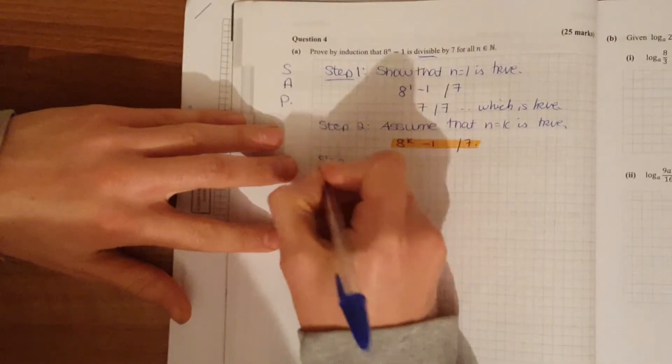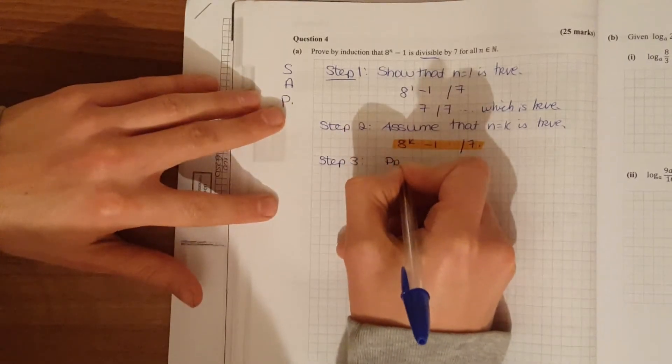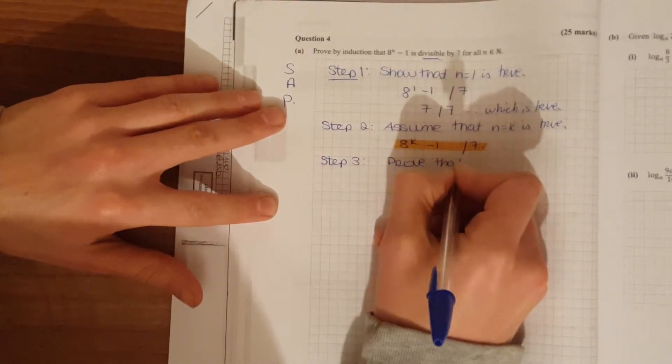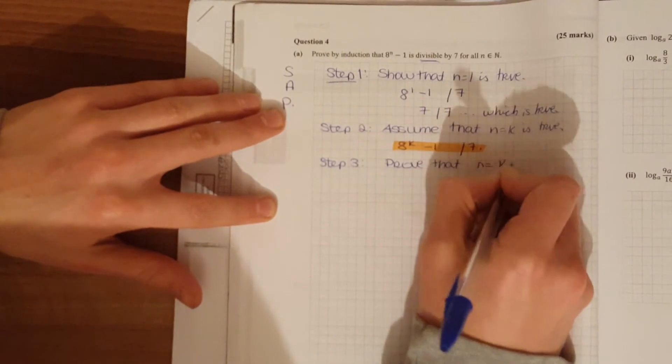And your final thing here, step 3, prove your P of SAT, prove that n is equal to k plus 1. It's true.